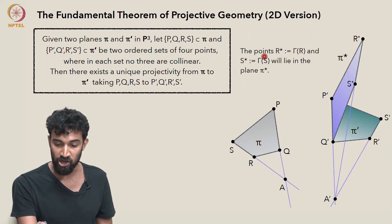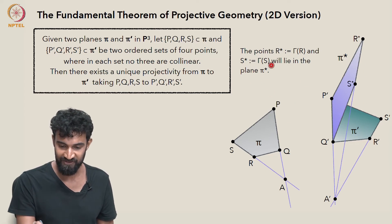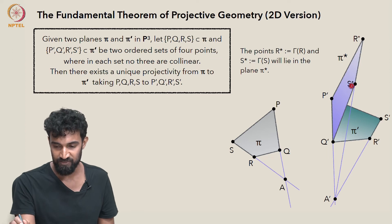So the points R star, which is just gamma of R, and S star, which is just gamma of S, they lie on π star.